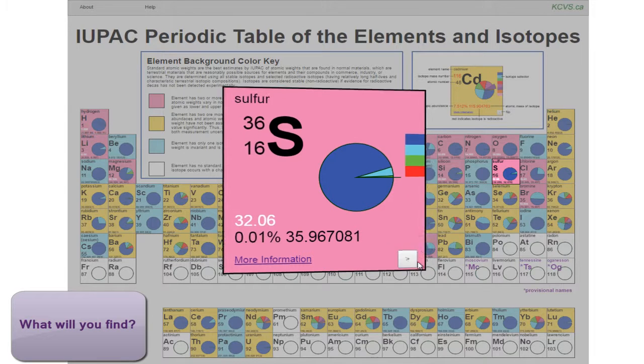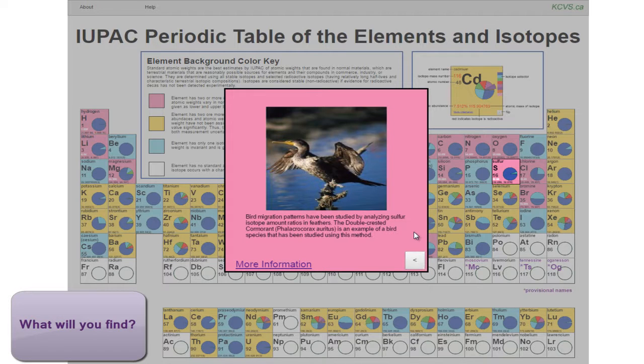On the back of each tile, you will learn more about why isotopes matter by exploring one interesting application of isotopes. For example, migration patterns in birds, like the double-crested cormorant, have been studied by analyzing sulfur isotope ratios in feathers.